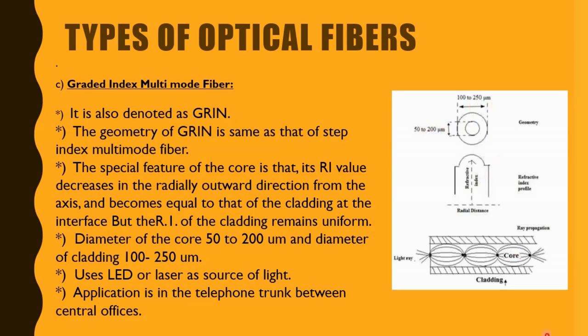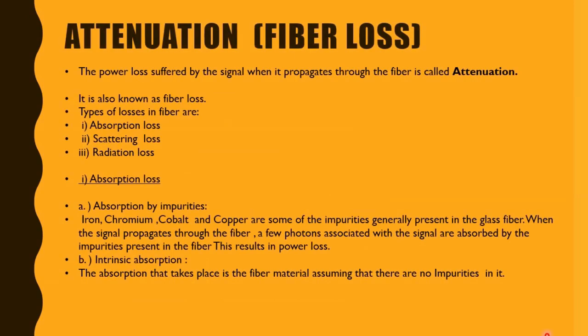Now we will look at attenuation, also known as fiber loss. This is the power loss suffered by the signal when it propagates through the fiber. There are three types of losses: absorption, scattering, and radiation.